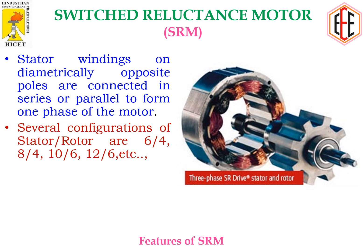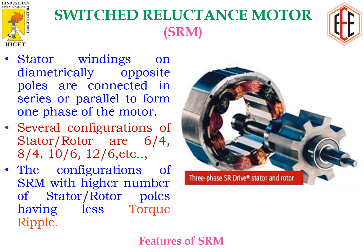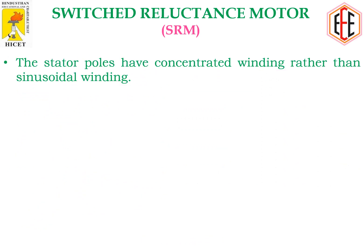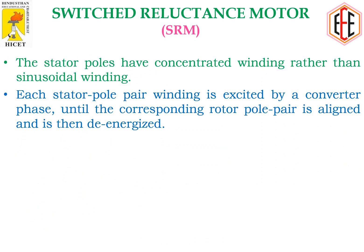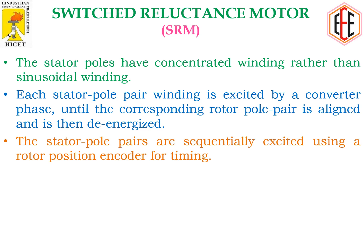For example, 6×4 means 6 stator teeth and 4 rotor teeth. Configurations with a higher number of stator or rotor poles have less torque ripples. The stator poles have concentrated winding rather than sinusoidal winding. Each stator pole pair winding is excited by a converter phase until the corresponding rotor pole pair is aligned and is then de-energized.